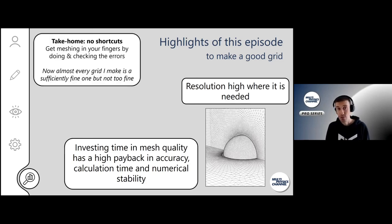The bad news is there are no shortcuts. You really have to do the work. You have to get the meshing in your fingers. Make a mesh, look at the results, see how good or bad they are, and then refine the mesh in the regions where it needs to be refined. Look at regions where you have high gradients and refine the mesh there. The good news is...